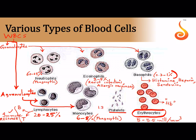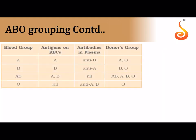Platelets (thrombocytes) number about 1.5 lakh to 3.5 lakh per millimeter cube of blood. They are derived from special giant nucleated cells present in the bone marrow. The main purpose of platelets is blood clotting.